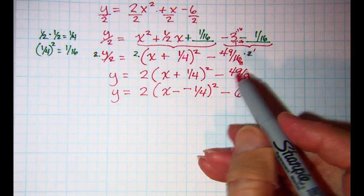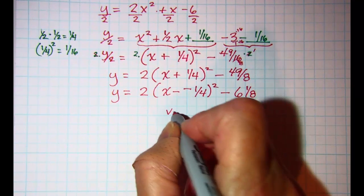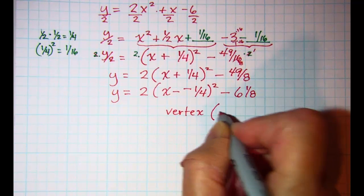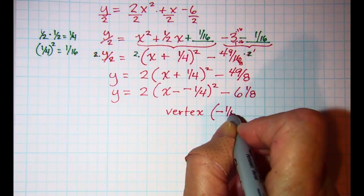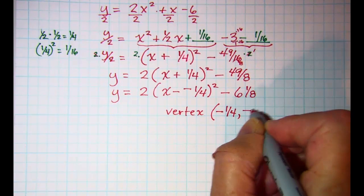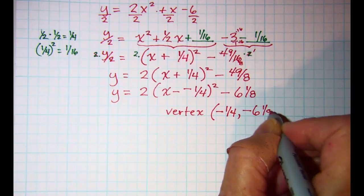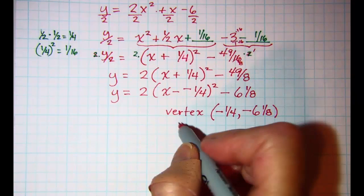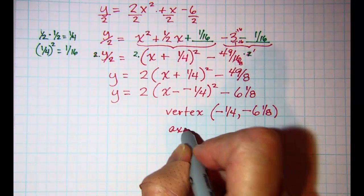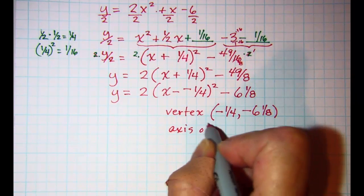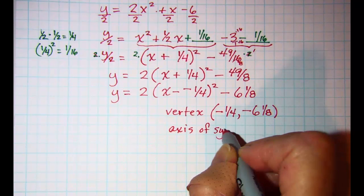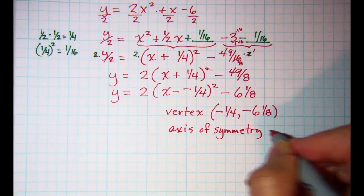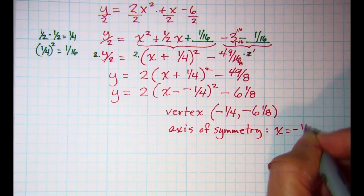So I can see then my vertex is going to be the point negative 1 fourth, negative 6 and 1 eighth. I also need to give my axis of symmetry on this, going to be x equals negative 1 fourth.